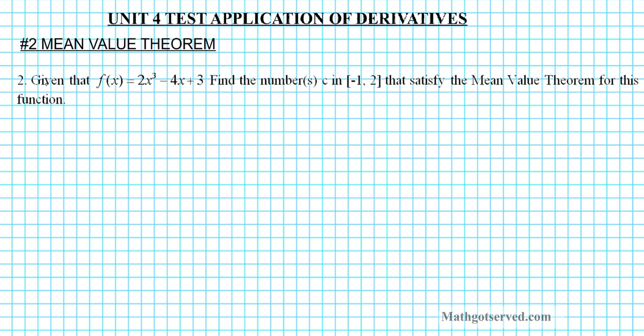Okay, so problem 2 reads, given that f of x is equal to 2x to the third minus 4x plus 3, find the numbers C in negative 1, 2 that satisfy the mean value theorem for this function. So the assumption is that the initial conditions are already met.